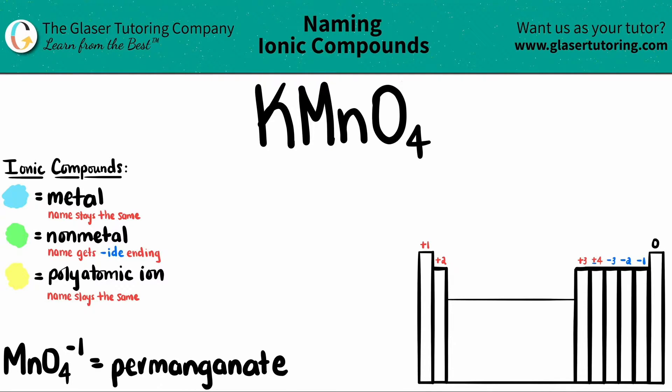So it's always easiest to find the polyatomic first and then come back and do the naming. Remember that polyatomic ions are never going to be on the periodic table. These have to be memorized.